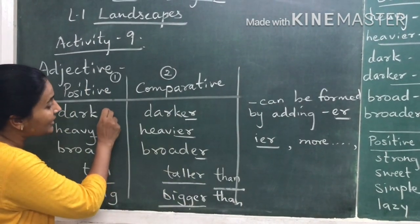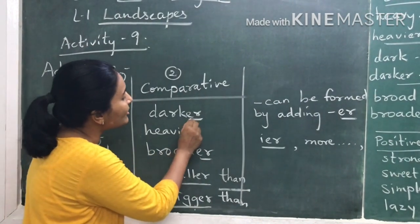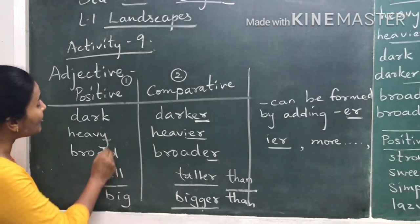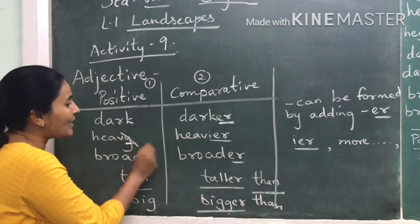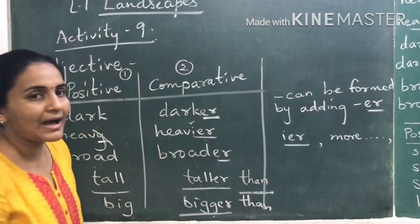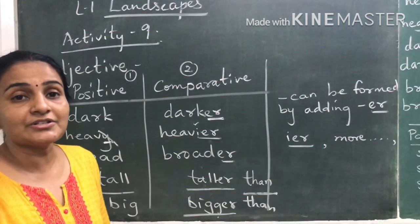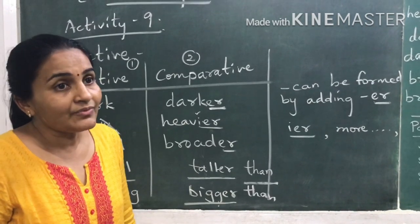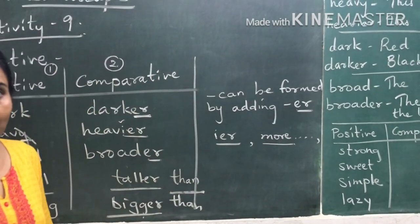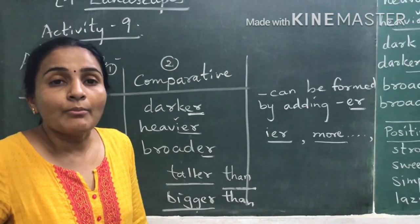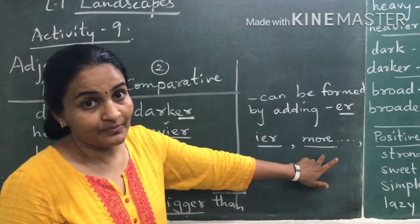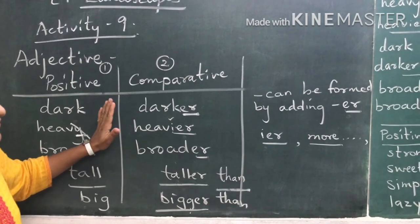To convert positive degree to comparative degree, generally you add -ER: dark becomes darker, broad becomes broader. If the positive degree word ends in Y, change the Y to I and add -ER — so 'heavy' becomes 'heavier.' For longer words where you cannot add -ER or -IER, such as 'intelligent' or 'beautiful,' you use the word 'more': more intelligent, more beautiful.